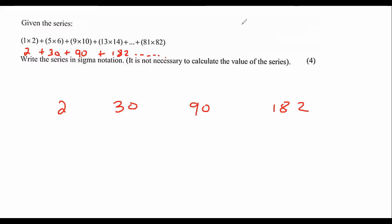For that, we need to look at the second difference. So we go down. This would be 28. Then 60. And then 92. If we then go down again, this would be 32 and 32 again. So this is a quadratic number pattern.